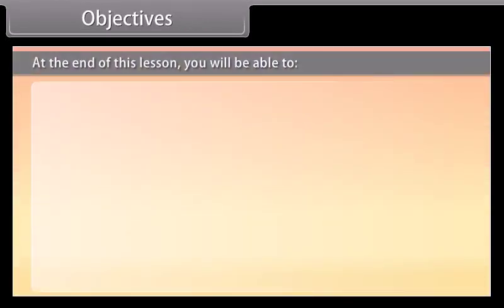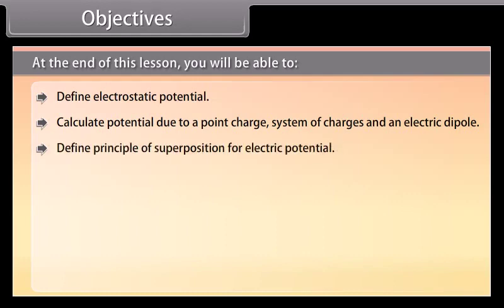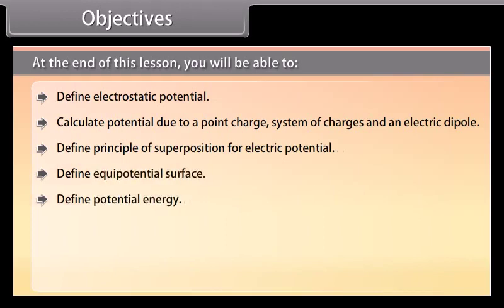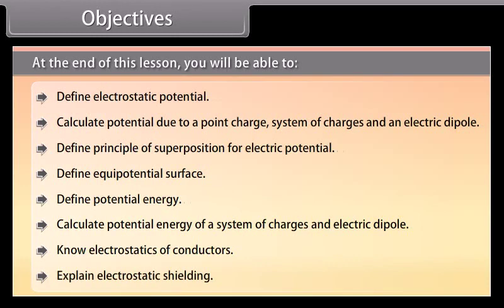At the end of this lesson, you'll be able to: define electrostatic potential; calculate potential due to a point charge, system of charges, and an electric dipole; define the principle of superposition for electric potential; define equipotential surface; define potential energy; calculate potential energy of a system of charges and electrical dipole; know electrostatics of conductors; and explain electrostatic shielding.